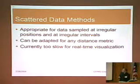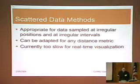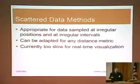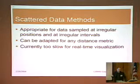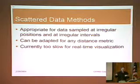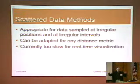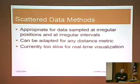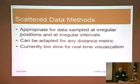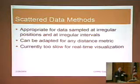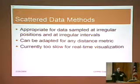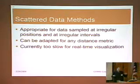So what are scattered data methods? Scattered data methods are appropriate for data sampled at irregular positions and at irregular intervals. This is exactly the situation that we have with typical sensor networks. We deploy sensors, and they are hardly ever deployed at regular positions or regular intervals — they are deployed at arbitrary positions somewhere in the environment. We also acquire the data not necessarily at regular time intervals; sensors might fail to transmit data for a certain period of time, and later we might be able to pick up readings again. So there are irregularities both in the spatial and in the time domain.